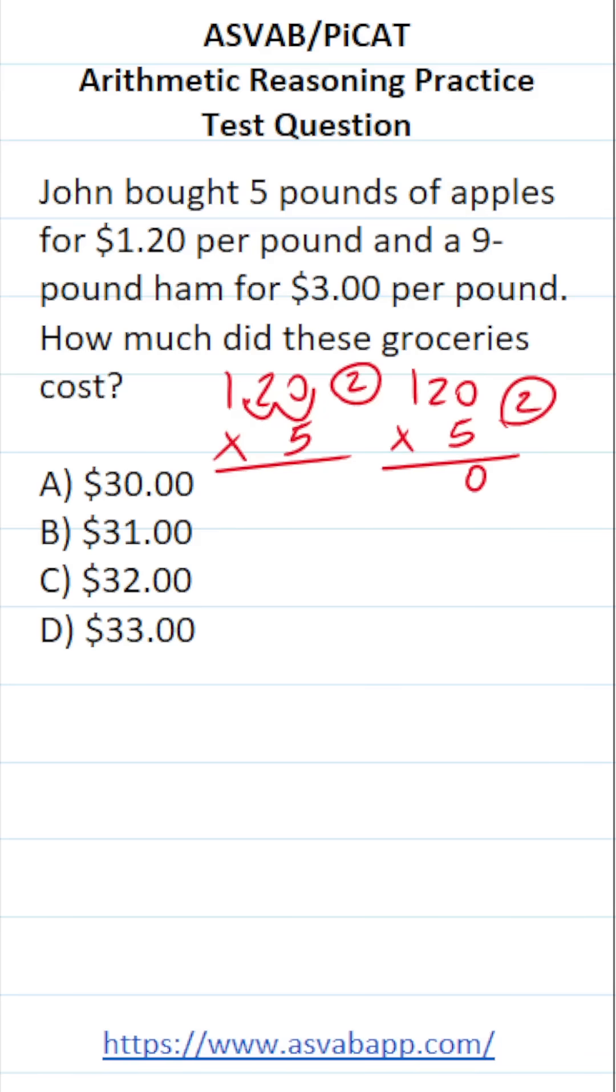Zero times five is zero. Two times five is 10, so bring down a zero, carry a one. Five times one is five plus one is six. Bring back in those two decimals. We can see that the five pounds of apples for $1.20 a pound cost a total of $6.